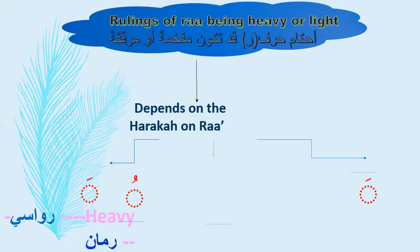If Ra has Kasra, it is light. For example, 'Yuridu' — it is 'Ree', not 'Roo'. Light Ra: 'Yuridu'.